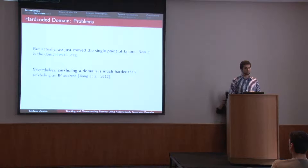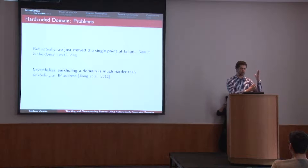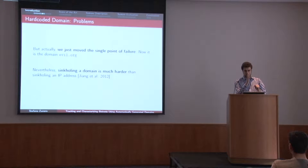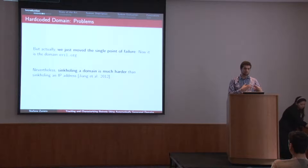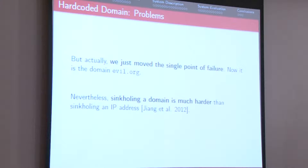If your bot keeps connecting to evil.org, at some point some of us will be able to take over the registration of evil.org, convince the registrar to give it over, and make the botnet disappear. There's actually a paper by Zhang and others — you'll find it listed in the references after my slides — that shows that going from a hard-coded IP to a hard-coded domain name makes the effort of taking it down harder. It's much easier for defenders to null route a malicious server than to take over the registration of a domain name.